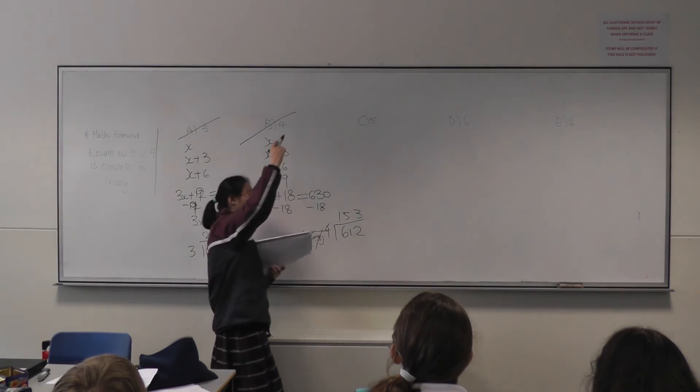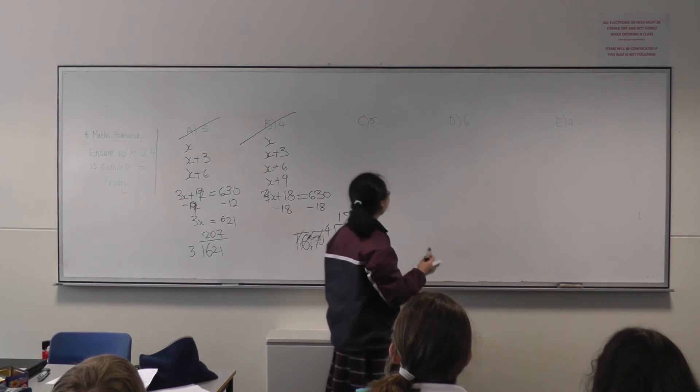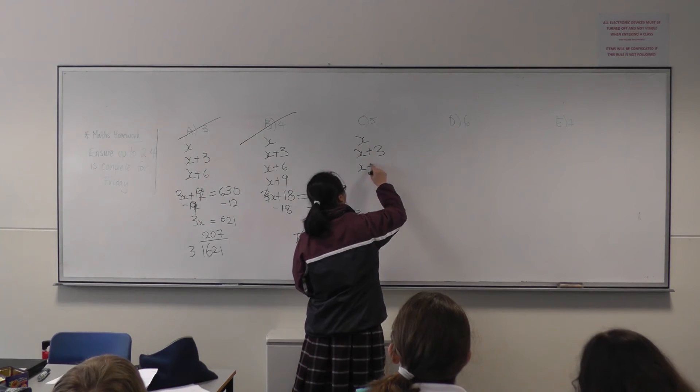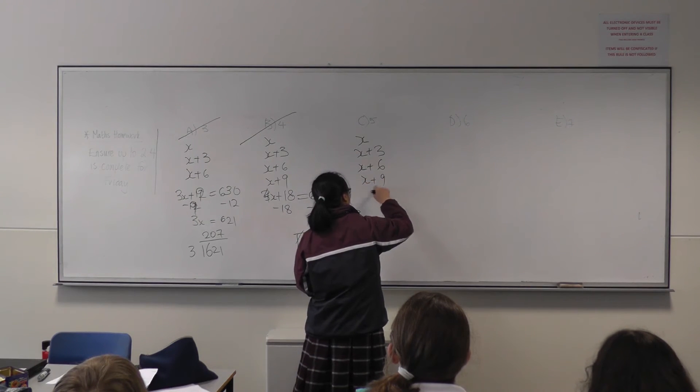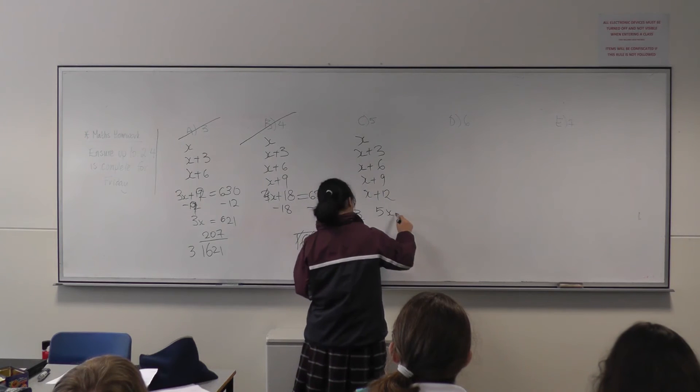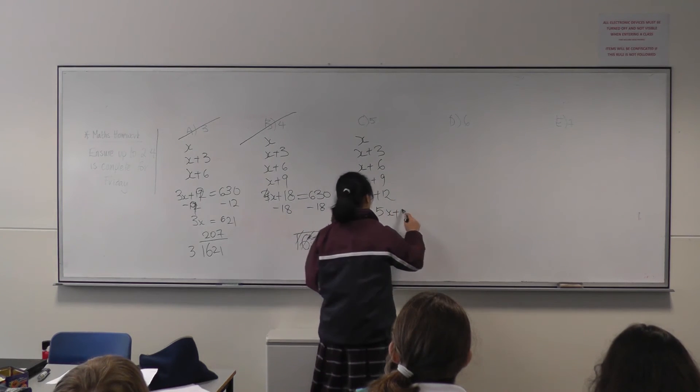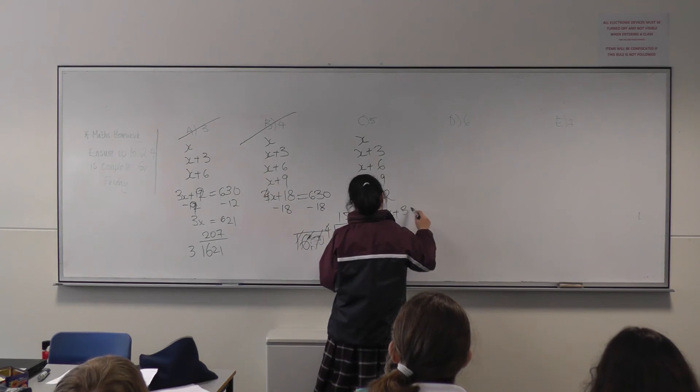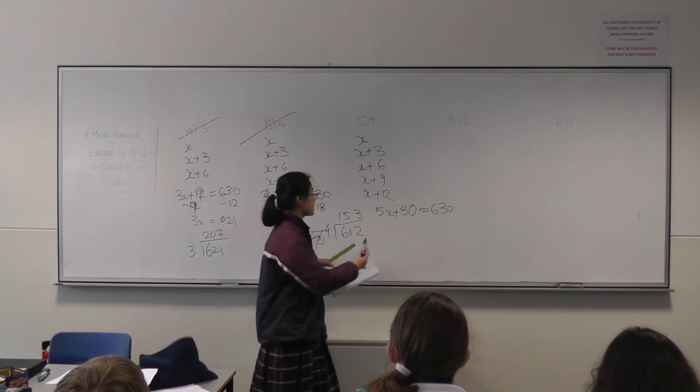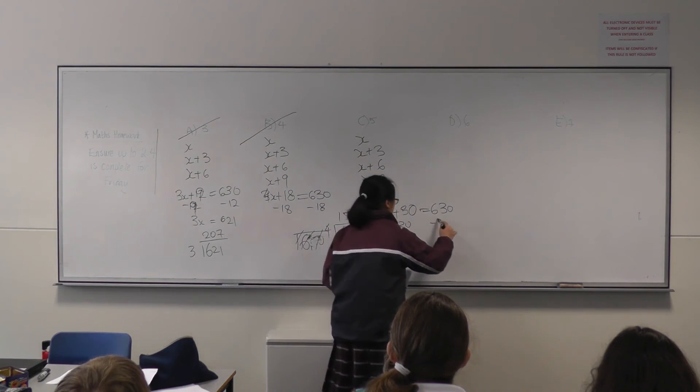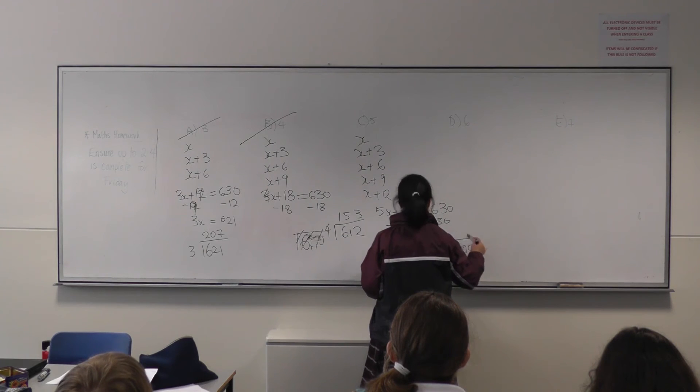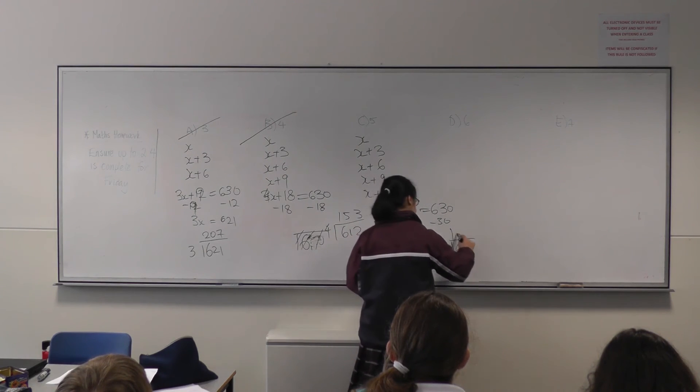And then we go to c, which is 5 rows. First row would be x and then x plus 3, and so on. So this would be 5x plus 30 equals 630. So if we take 30 from each side, we can find 5x. And then divide it to see if it's divisible by 5, which it is. It comes to 120.